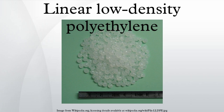Linear low-density polyethylene is a substantially linear polymer with significant numbers of short branches, commonly made by copolymerization of ethylene with longer-chain olefins. Linear low-density polyethylene differs structurally from conventional low-density polyethylene because of the absence of long-chain branching.